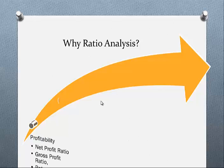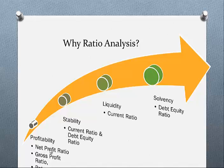Why do we have Ratio Analysis in the first place? We want to examine profitability, for which we look at the net profit ratio, the gross profit ratio and the return on owner's equity. We want to work out how stable the business is, for that we look at the current ratio and debt ratio. Liquidity is the amount of cash being generated and the ability to pay short-term debts, using the current ratio. And lastly solvency — how solvent a business is over a longer period and its ability to meet longer-term commitments — for that we look at the debt equity ratio.